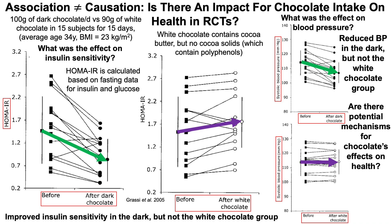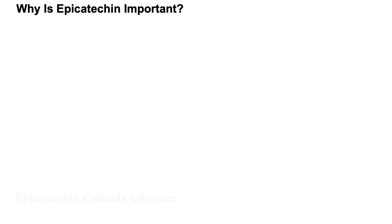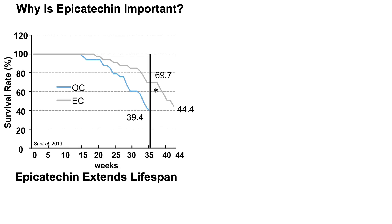So what are some potential mechanisms for chocolate's effects on health? One potential explanation involves the polyphenol epicatechin. Epicatechin is important simply because it extends lifespan — at least in mice.